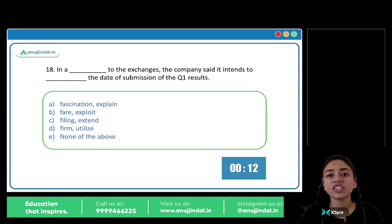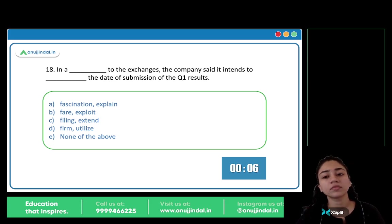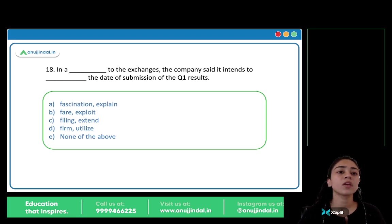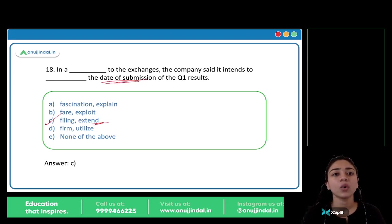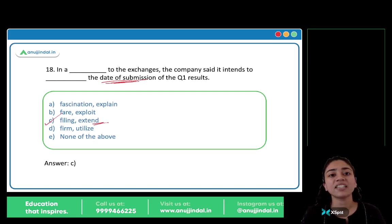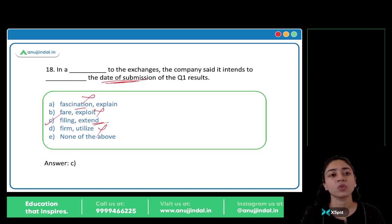In a blank to the exchanges, the company said it intends to blank the date of submission of the Q1 results. The answer is option C: filing and extend. In a filing to the exchanges, the company said it intends to extend the date of submission. Fascination, fair, and firm don't fit. So C is your answer.